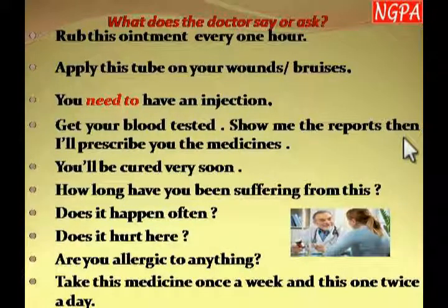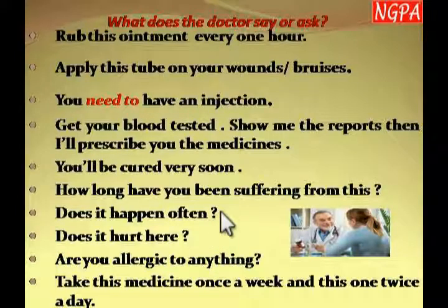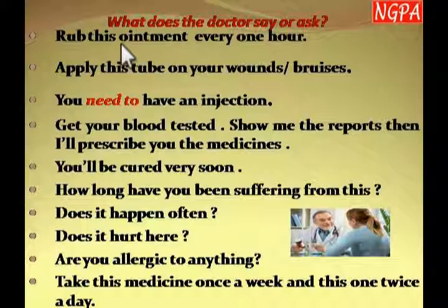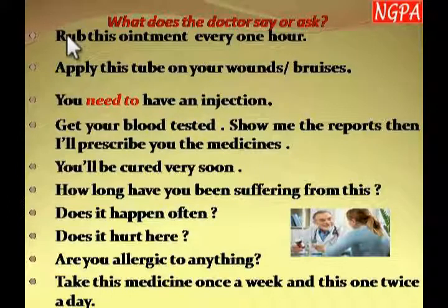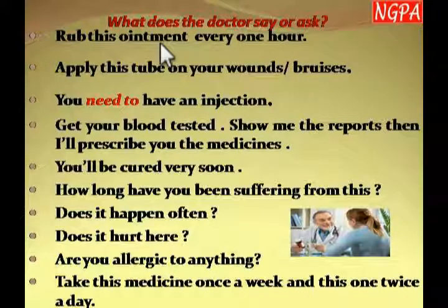Now here are some sentences a doctor might say in English that you should understand. 'Rub this ointment every one hour' — an ointment is medicine in a tube form, which you apply or rub. 'Apply this tube on your wounds or bruises' — wounds are cuts (ghav) and bruises are from blunt injuries. You can call it marham in Hindi.